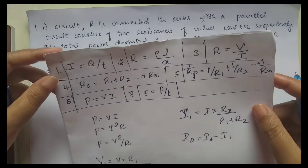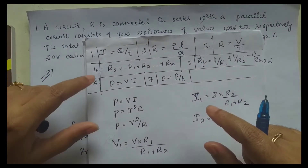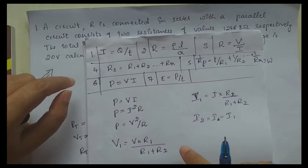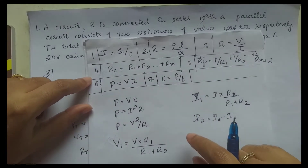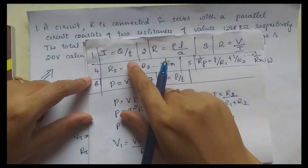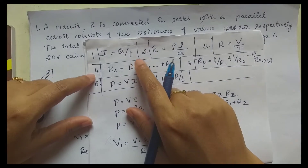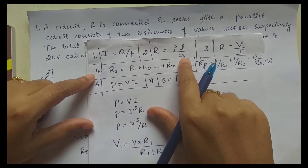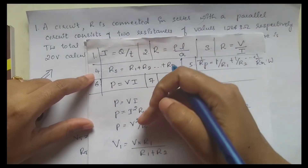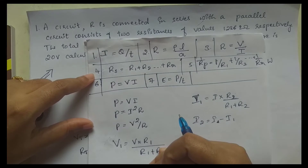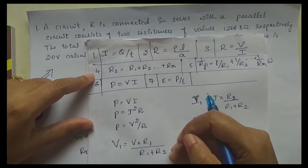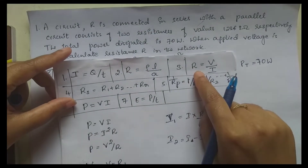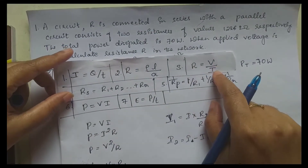Let us list out the formulas available in chapter 1 of module 1: R is equal to Q divided by T, R is equal to rho L by A. Also available: R is equal to V by I.